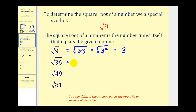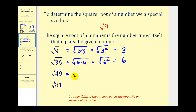The square root of thirty-six: thirty-six is a perfect square because we can write it as six times six, or six squared, and this equals one factor of six. The reason this is six is because six times six equals thirty-six. The square root of forty-nine, because that's seven times seven, or seven squared, would be equal to seven.